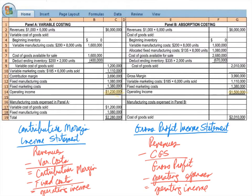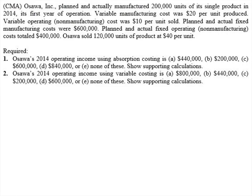Now I'd like for you to try one on your own. This question is adapted from the CMA exam. Ossawa Incorporated planned and actually manufactured 200,000 units of its single product in 2014, its first year of operations. Variable manufacturing cost was $20 per unit produced. Variable operating non-manufacturing cost was $10 per unit sold. Planned and actual fixed manufacturing costs were $600,000. Planned and actual fixed operating non-manufacturing costs totaled $400,000. Ossawa sold 120,000 units at $40 per unit. Your first objective is to create an absorption costing income statement and calculate their 2014 operating income. The answer choices are $440,000, $200,000, $600,000, $840,000, or none of these.